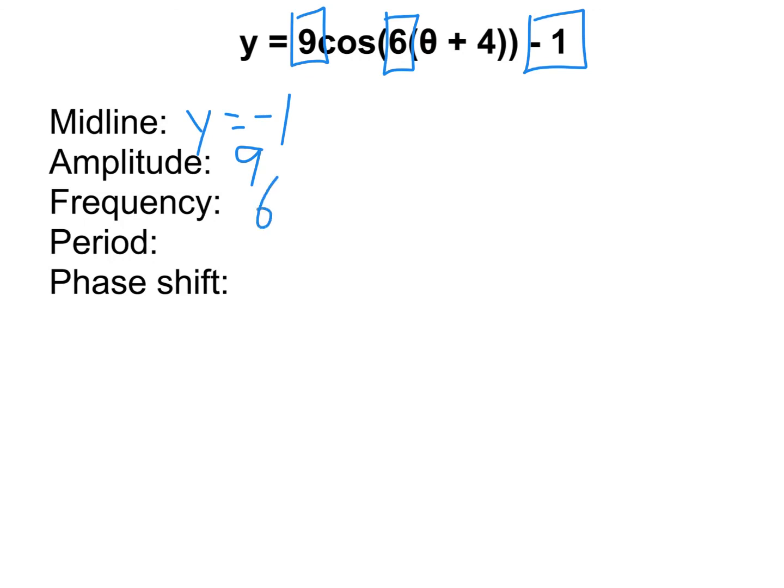The period, remember, is 360 divided by the frequency. So, it's going to be 360 divided by 6, which is 60 degrees. And the phase shift, that comes from whatever is added or subtracted inside. In this case, that's the plus 4. And plus 4, remember, means that we're actually moving it left. So, it's going to be a left 4 for the phase shift. Make sure you have this written down correctly. And then, you should be ready to go on the assignment.